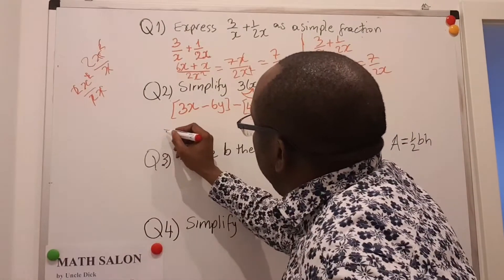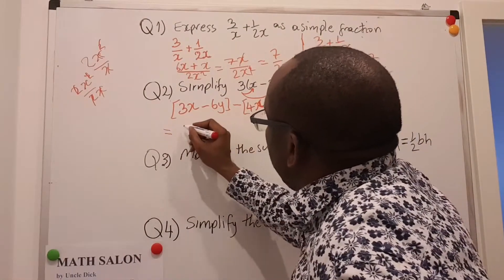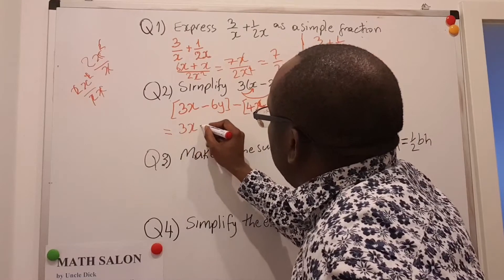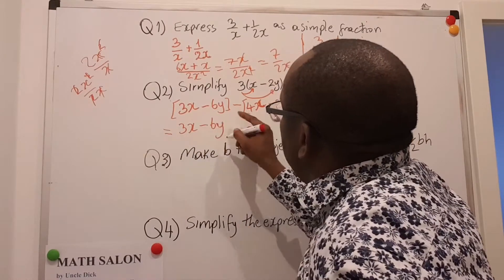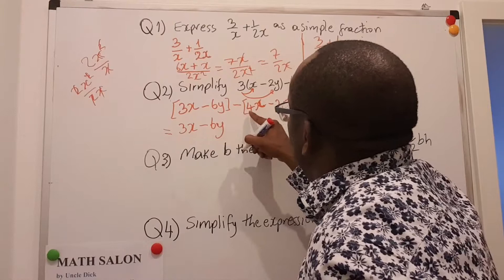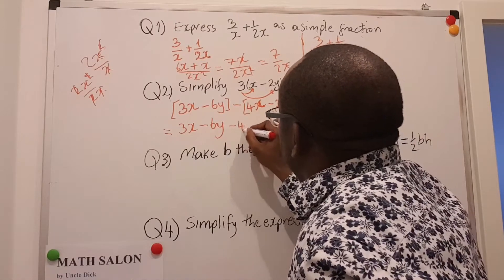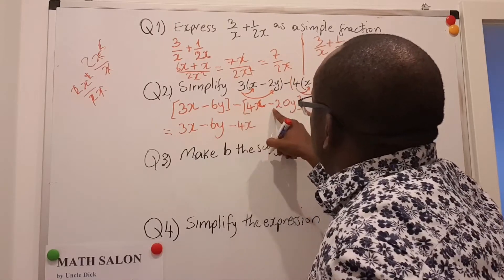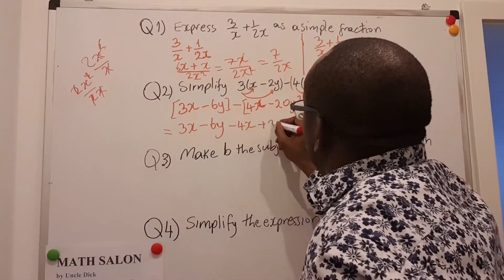So if we try to fix this, just open up: 3x minus 6y. This minus can now go inside. Minus 1 times 4x is minus 4x. Minus 1 times minus 20y is plus 20y.